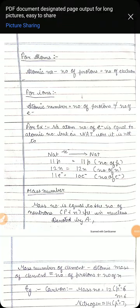Greetings of the day to everyone. This is the video for class 9th, chapter 4: Structure of Atom — Part 3. In this video, we are going to discuss about valency, isotopes, isobars, and uses of isotopes.